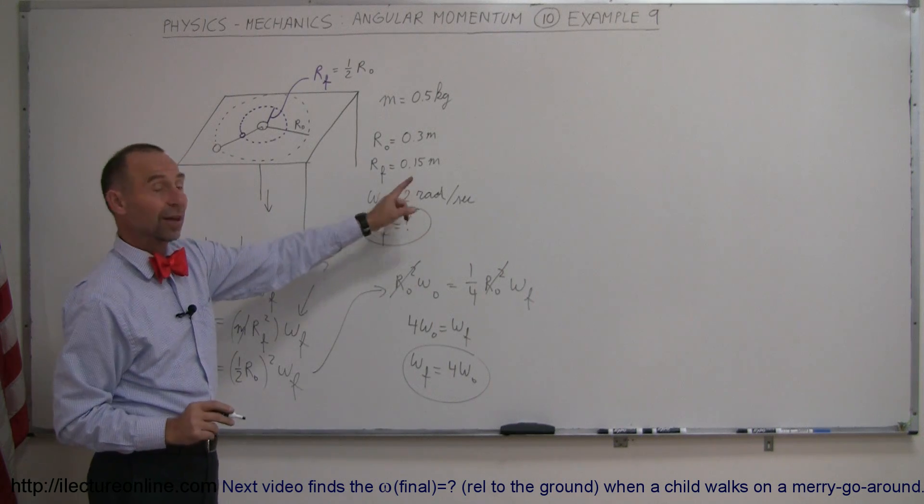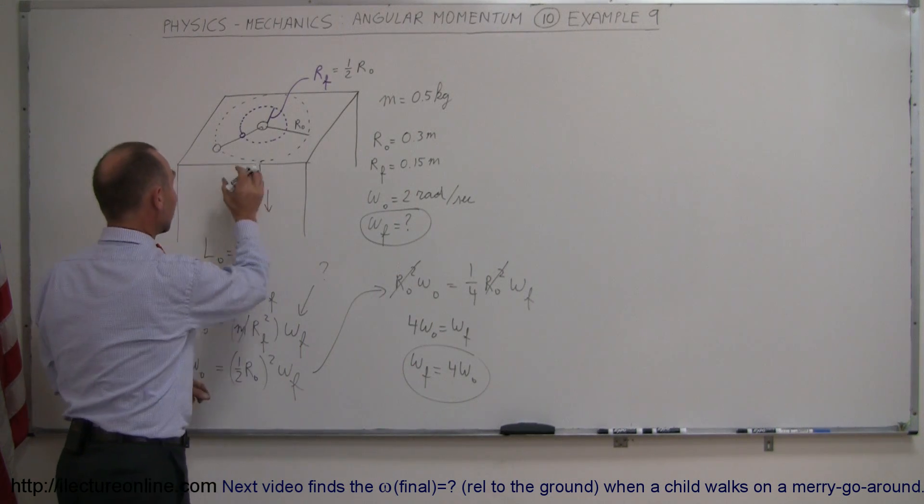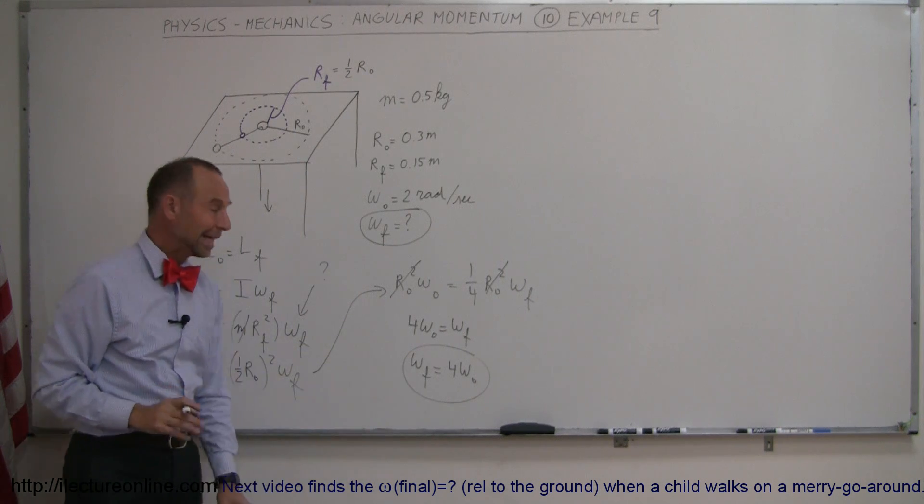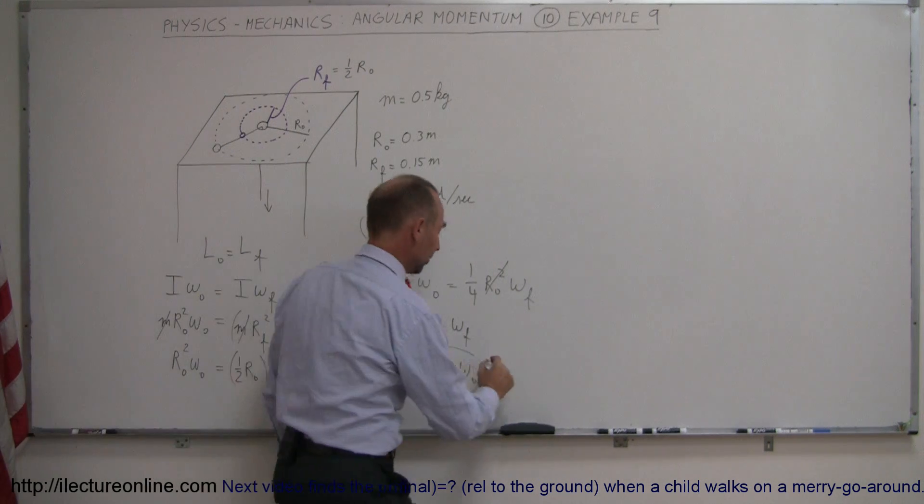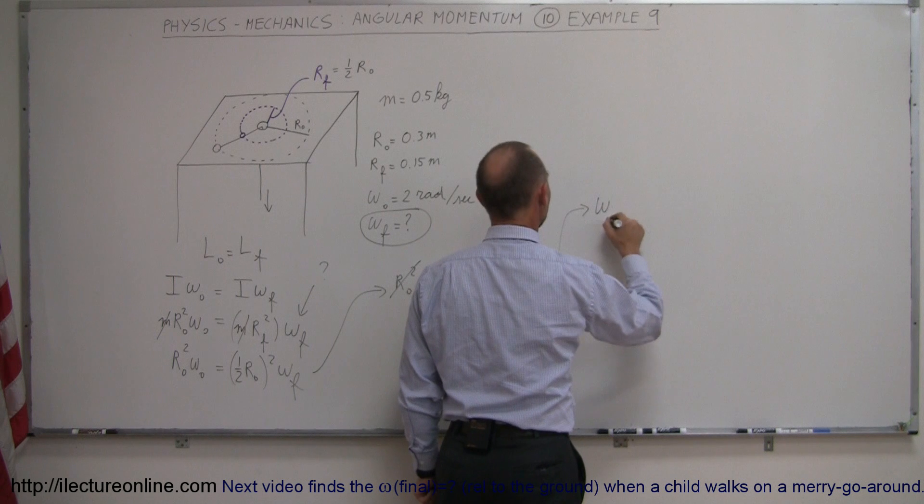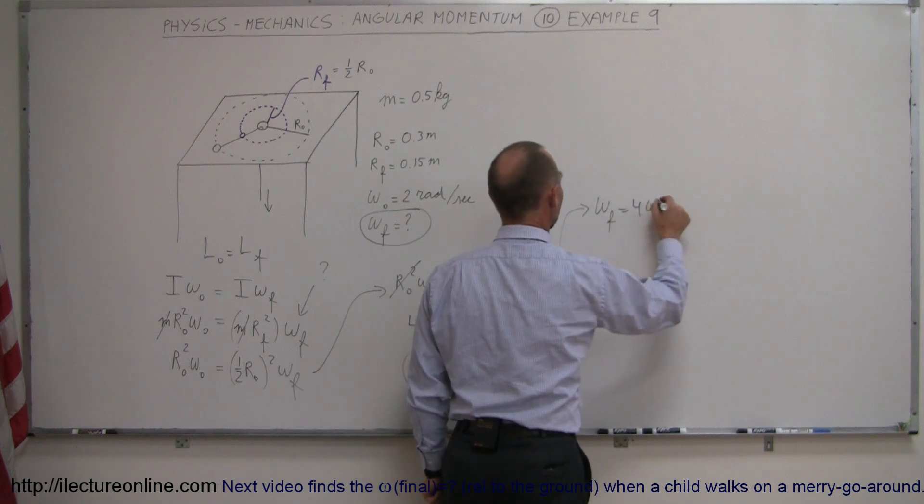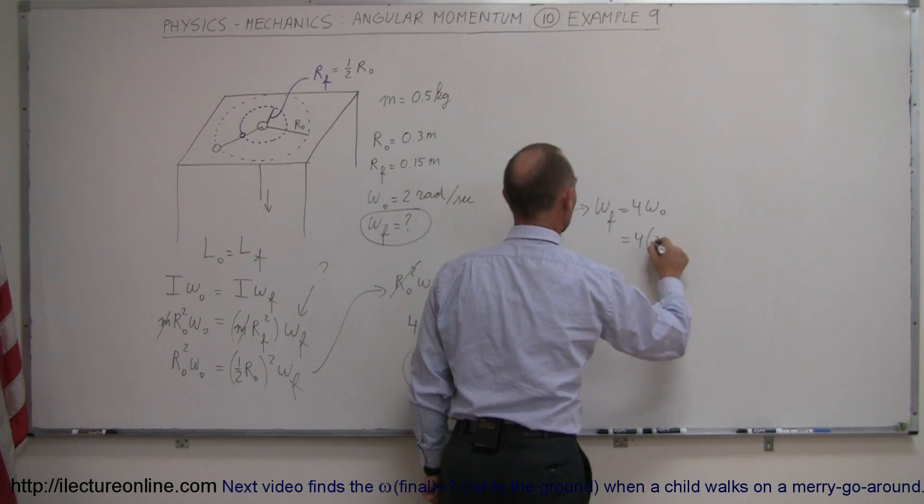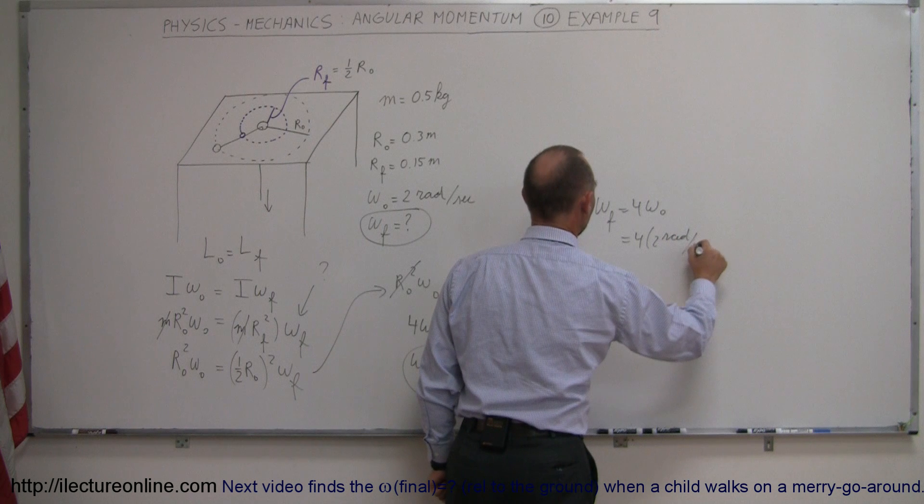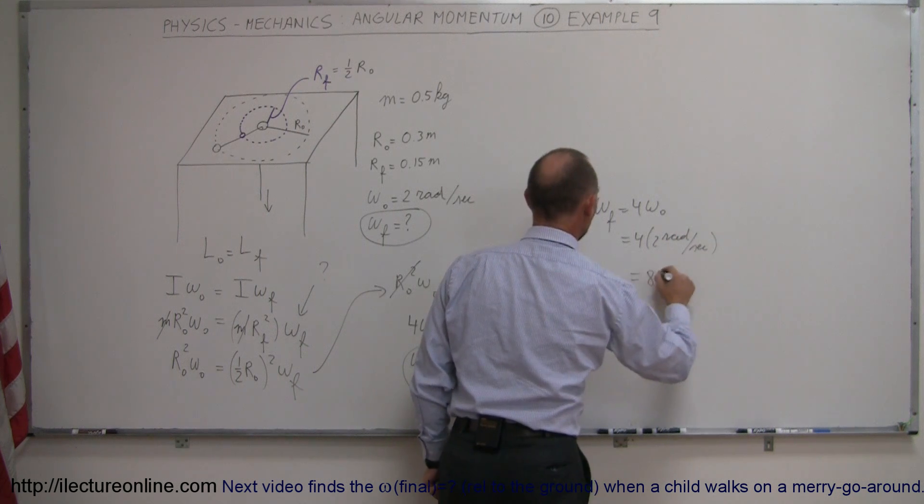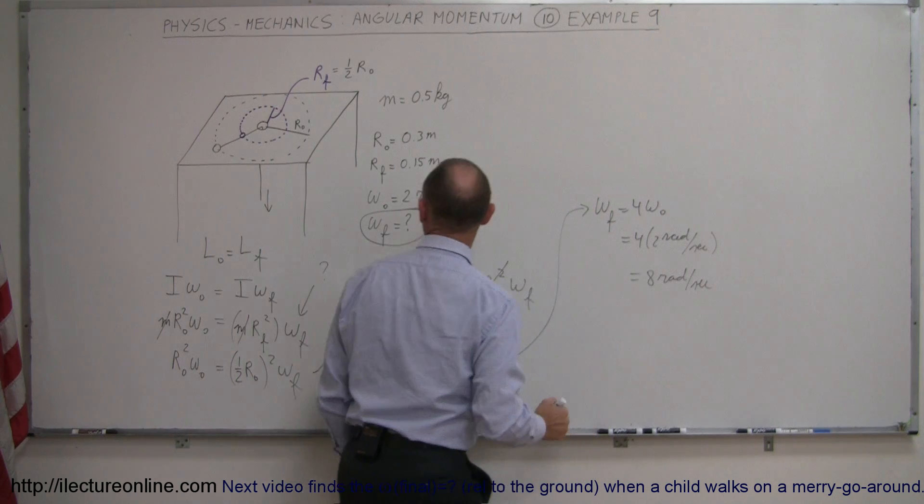So if the initial angular velocity was two radians per second when I pull this puck in so now that it's only half the radius the final will be eight radians per second. So omega final is equal to four times omega initial which is four times two radians per second which is equal to eight radians per second.